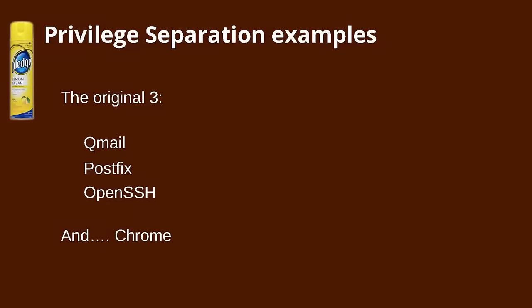Privilege separation in that process is simple, but there have been larger programs that use this concept. The first was Qmail. Around the same time, PostFix started doing privilege separation using sockets. This led Niels Provost to extend OpenSSH to also do privilege separation for pre-authentication — quite a complicated protocol to add it to. The final main example is Chrome, which was designed from the get-go with multiple processes and separation of tasks.